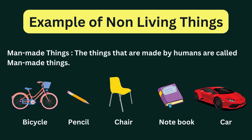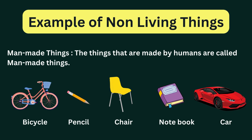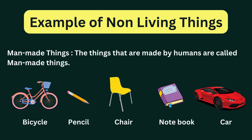Man-made things: the things that are made by humans are called man-made things. Here we see some examples: bicycle, pencil, chair, notebook, and car.